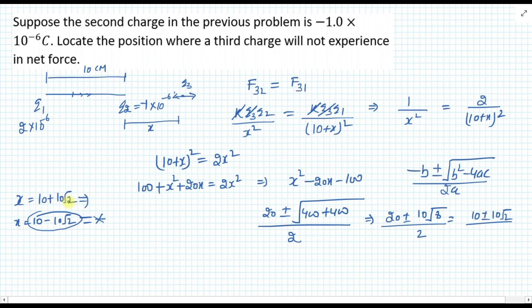Now 10 plus 10 root 2, the value of root 2 is 1.414. So if we multiply this, it is going to be 24.14. So 24.14 from the Q2 position, which is going to be in the right hand direction. So if I want to see the value from Q1, then I can say Q3's position is equal to 34.14 from the larger charge. So this is the solution of this problem.